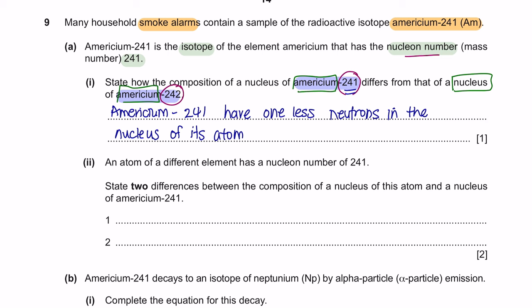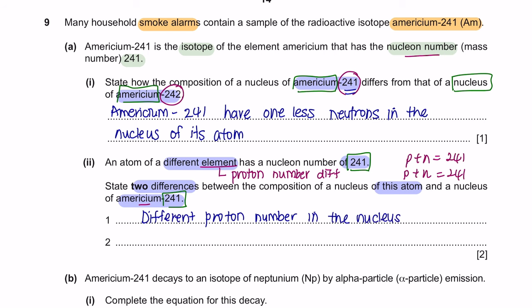Part 2: An atom of a different element has a nucleon number of 241. State two differences between the composition of its nucleus and that of americium-241. Since a different element is used, the proton number is no longer the same as americium — that is the first difference. Since both have the same nucleon number but different proton numbers, they must also have different neutron numbers — that is the second difference.